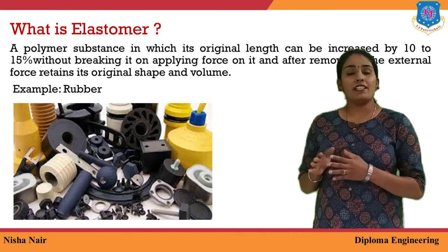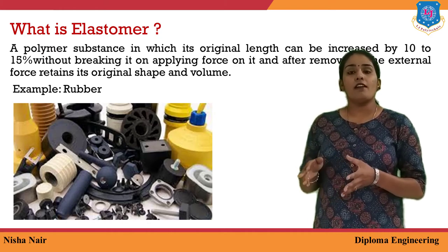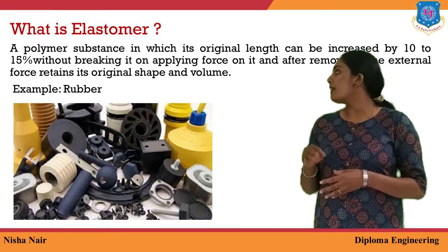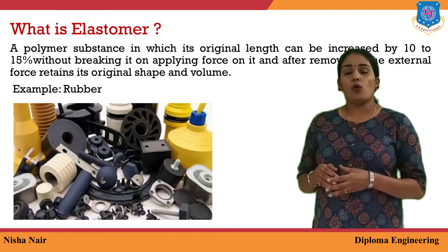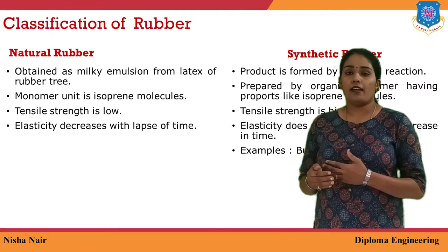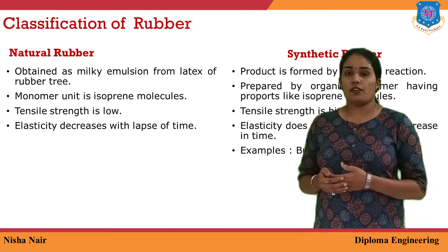The best example for elastomers is rubber. Rubber can be classified into two types: one is natural rubber and another is synthetic rubber.